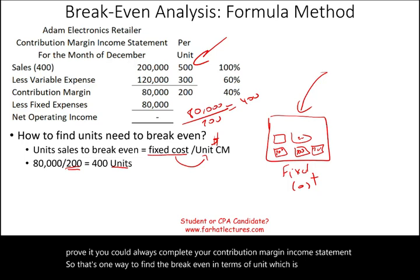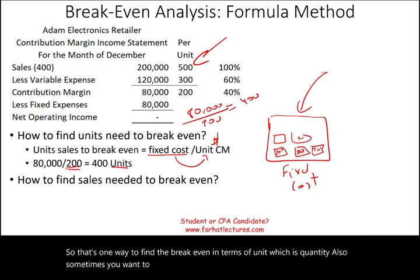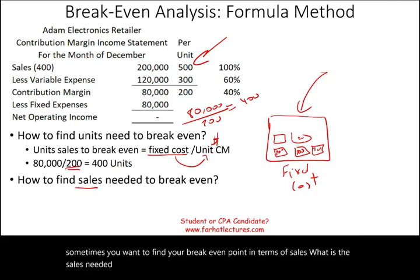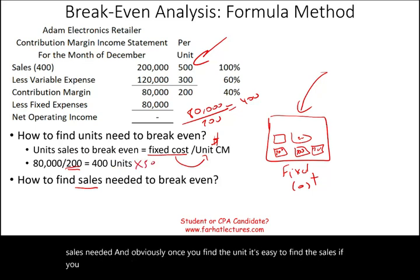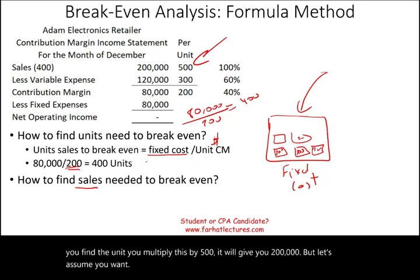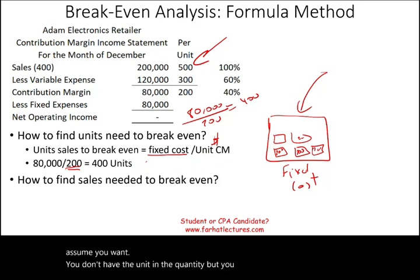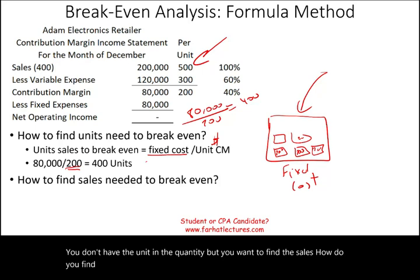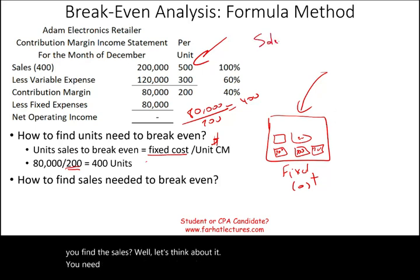Sometimes you want to find your break-even point in terms of sales dollars. Once you find the units, it's easy — multiply 400 units by $500 to get $200,000. But if you don't have the unit quantity and want to find the sales directly, let's think about it. You need enough sales — call it X — and for every dollar in sales, you make 40%.